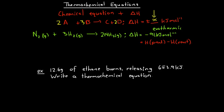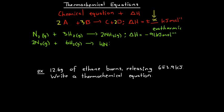If we wanted to change this equation slightly so that we were dealing with different coefficients, how would that change the thermochemical equation? If we rewrote this as 2 nitrogen molecules reacting with 6 hydrogen molecules to produce 4 ammonia molecules, this equation is exactly the same — just not in simplest form. However, because our coefficients doubled, our delta H now has to show the change in enthalpy for 2 moles of nitrogen and 6 moles of hydrogen. So our delta H is going to be twice as much as before.